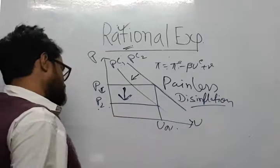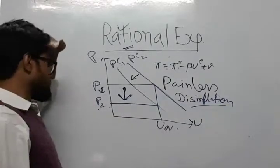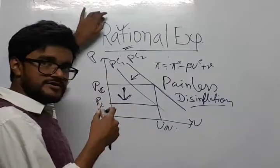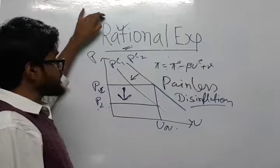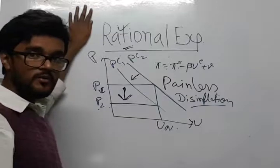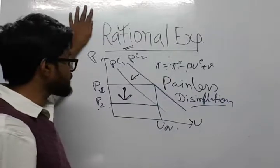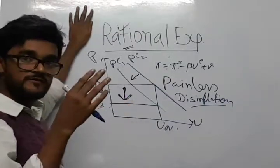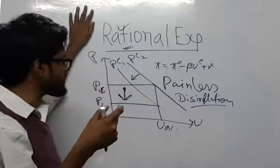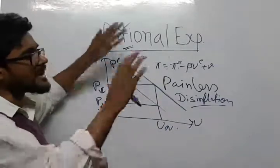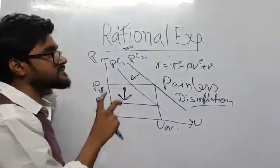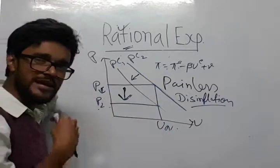This is rational expectation. In this lecture, we talked about rational expectation and how it is different from adaptive expectation. In the next video, we will conclude our discussion on the Phillips curve with the difference between the long-run Phillips curve and the short-run Phillips curve and what is the difference between their elasticities — which one is more elastic.